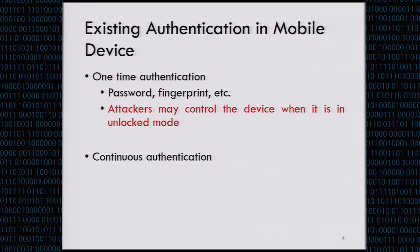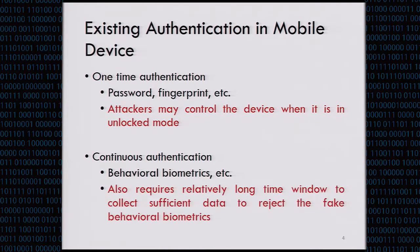The other kind of method is continuous authentication. When the user is using the device, then the device can authenticate the user continuously and silently using behavioral biometrics. This kind of method can detect the attack only when the attacker has used the device for some time to collect sufficient data and reject the fake behavioral biometrics.